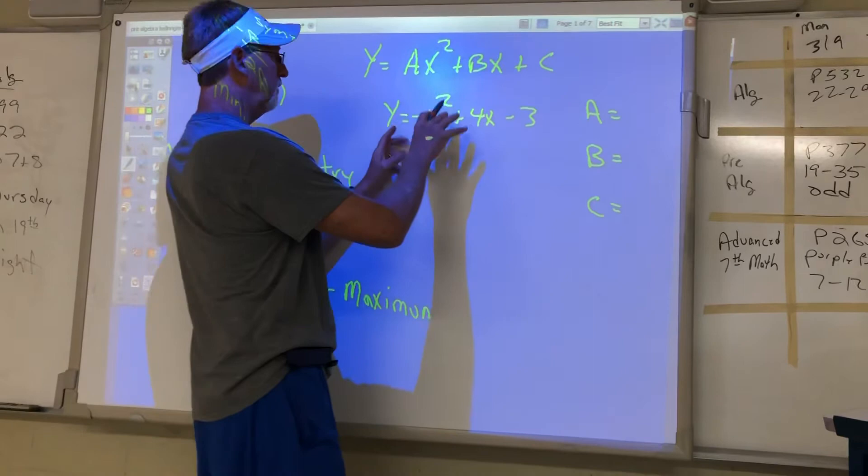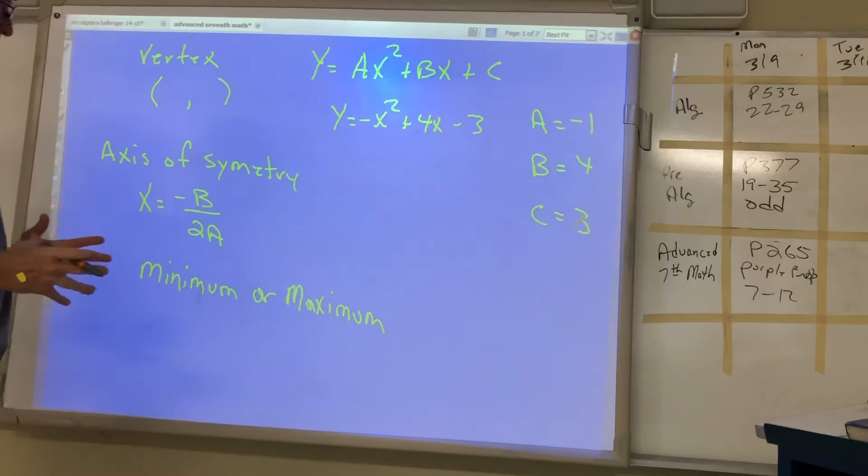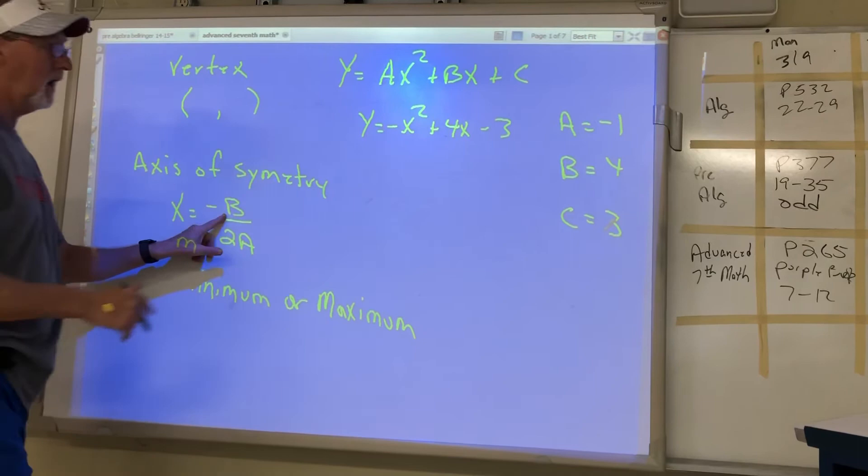So on these, we have to find the vertex, which is an ordered pair. And by doing that, we find the x first, which the other day I didn't say the x was actually called the axis of symmetry as well. But we need the opposite of B. So look at this one. The opposite of 4, which is negative 4, over 2 times negative 1 this time.